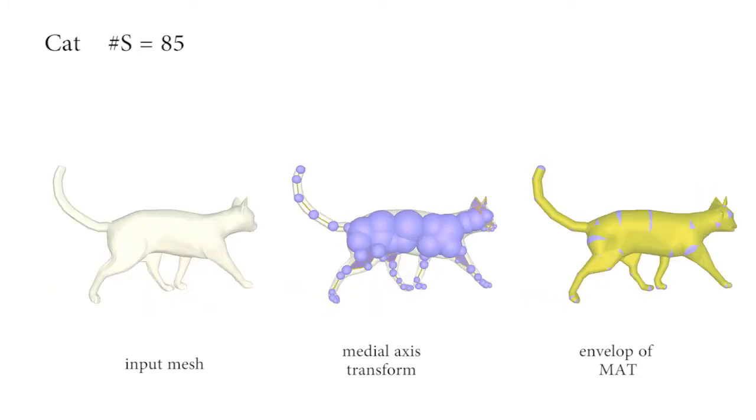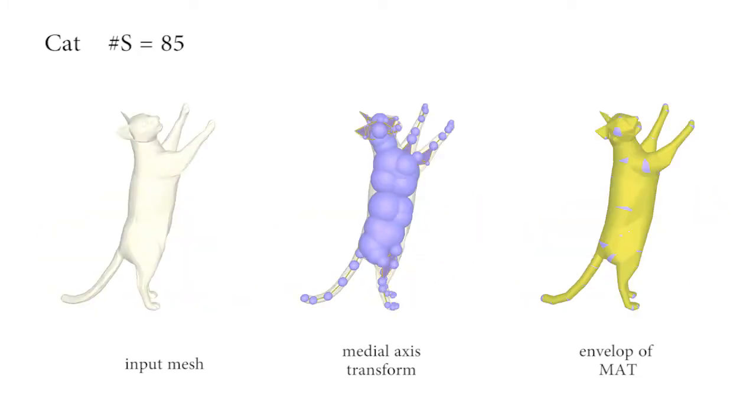The results show that our method can extract an accurate medial mesh on volume-preserving animated surfaces such as the cat.